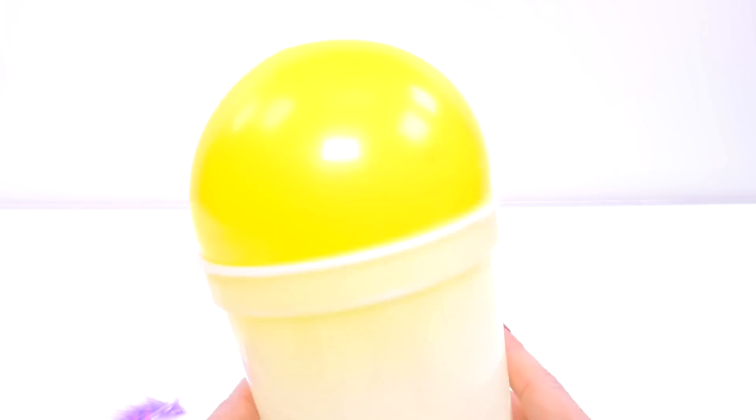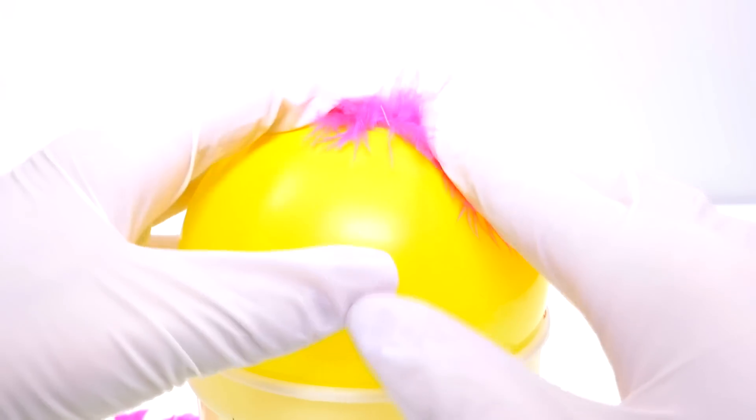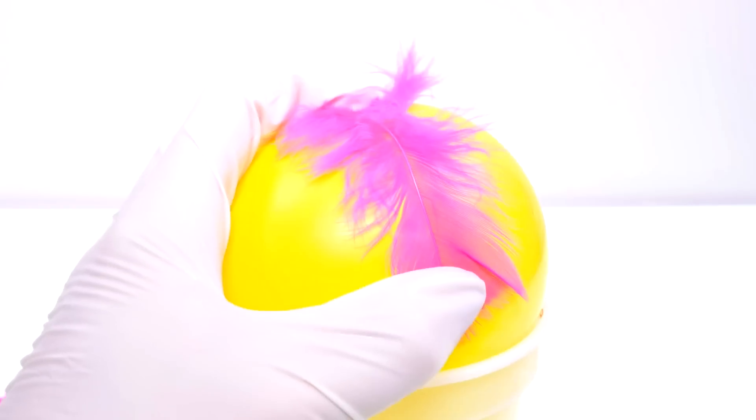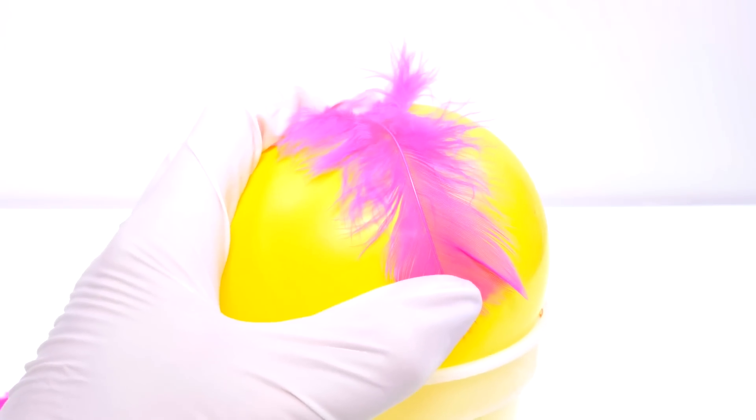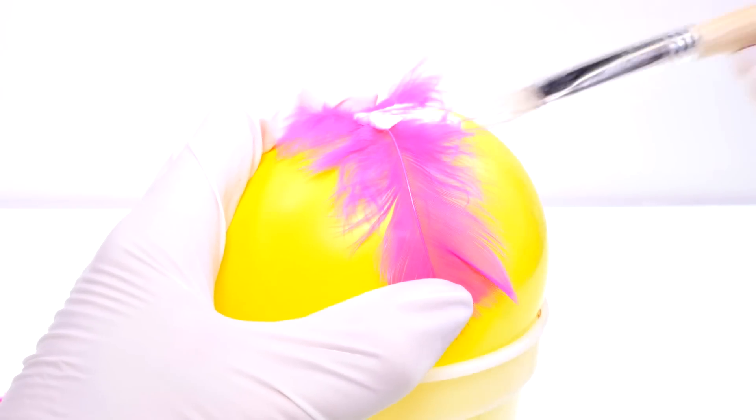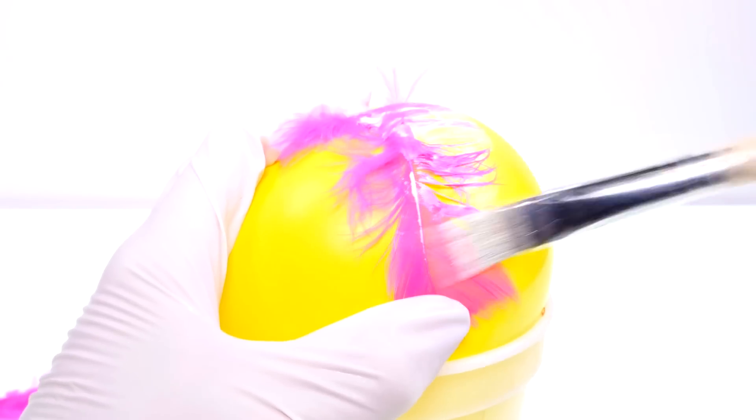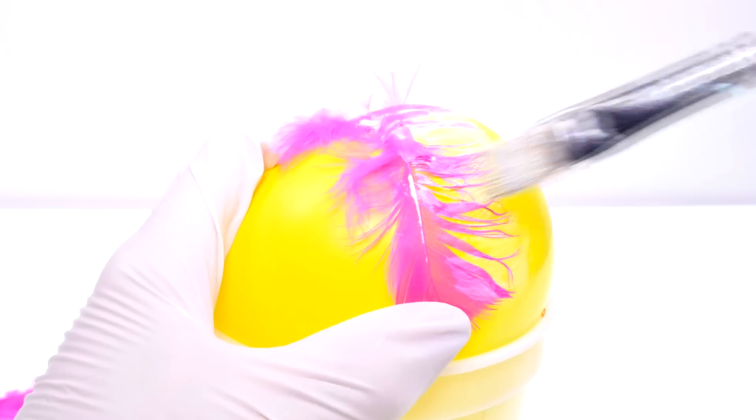This is the part that will be covered with Mod Podge and feathers. So now I'm just going to place my feather on the balloon here, then I'll start painting on the Mod Podge. This is probably going to get really messy and look kind of weird.